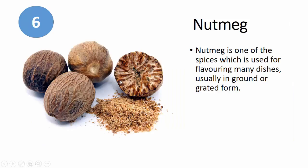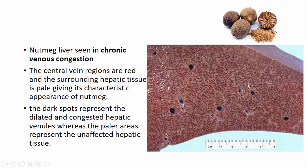The sixth one is the nutmeg — most commonly heard as nutmeg liver in undergraduate pathology. Nutmeg is a spice used for flavoring dishes. Nutmeg liver is seen in chronic venous congestion, where the central vein regions are red and the surrounding hepatic tissue is pale, giving the characteristic alternating dark and light appearance of nutmeg. The dark spots represent dilated and congested hepatic venules, while the paler areas represent unaffected hepatic tissue.